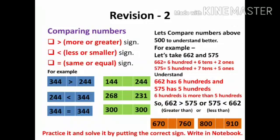In the same way, we can compare numbers above 500. For example, 662 and 575: 662 is greater than 575, and 575 is smaller than 662. You can practice by taking other numbers, for example comparing 670 and 760, or 800 and 910. Practice and solve by putting the correct sign.